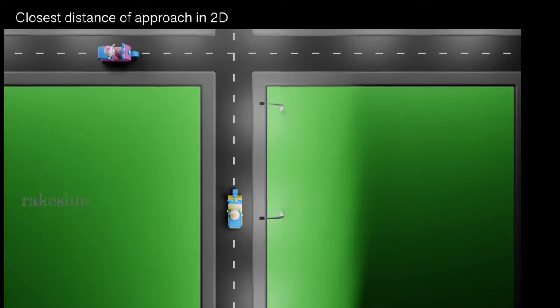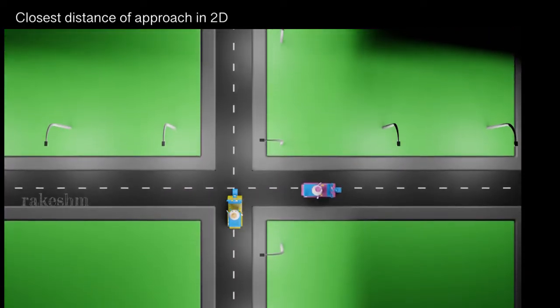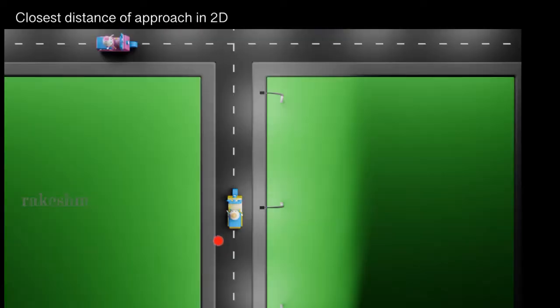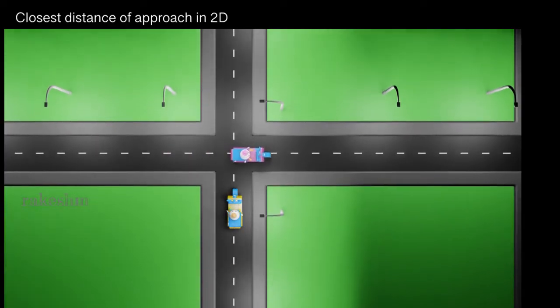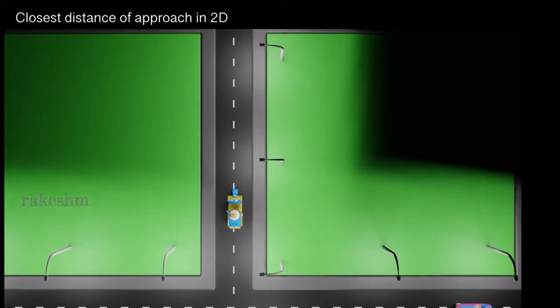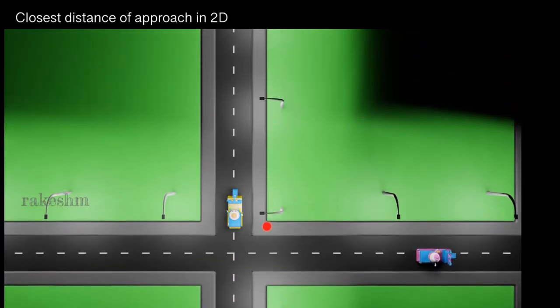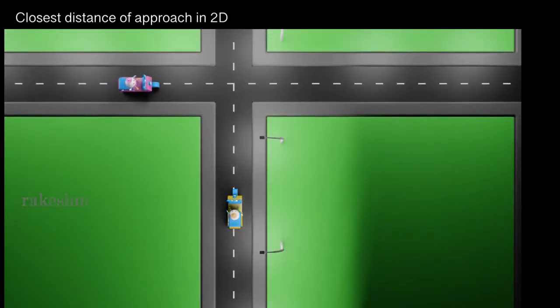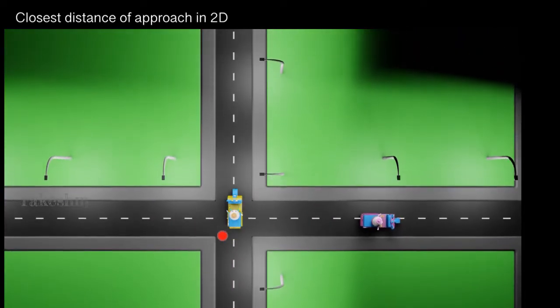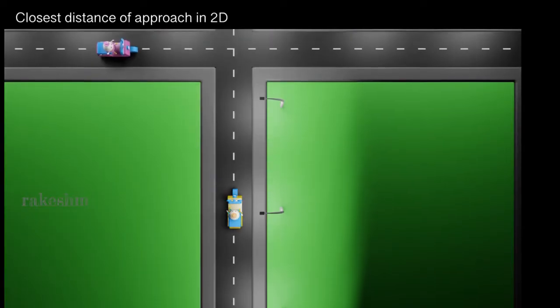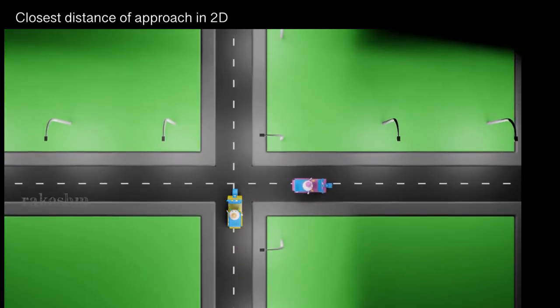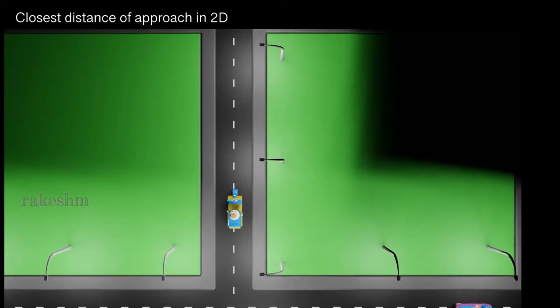Now we are looking at the motion of person 2 with respect to person 1. In our schematic, person 1 appears to be at rest and only person 2 is moving. To give the exact relative motion, I will remove the road and lights and keep only the two persons in view. So we are looking at motion in the frame of person 1 — person 1 is at rest and sees person 2 moving.